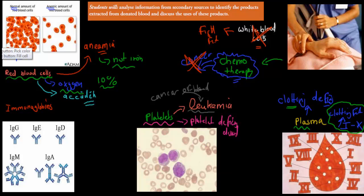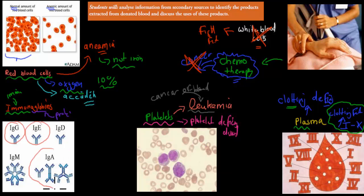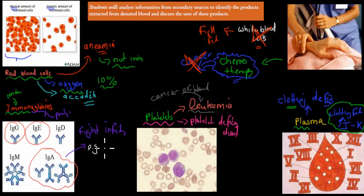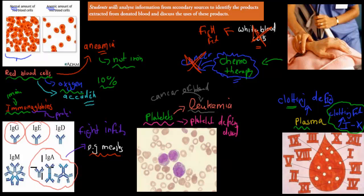Another product is immunoglobulins. The word 'immuno' refers to the immune system, and 'globin' means a protein — so these are proteins that help fight infection. Examples include IgG, IgE, and IgA. They specifically help fight infectious disease. For example, if someone has measles they might not have immunoglobulins against that disease, but we can take immunoglobulins from other people and inject them. That means they can now help fight that measles infection. We give immunoglobulins to people who don't have that immunoglobulin themselves — getting it from other people helps them fight their infection.